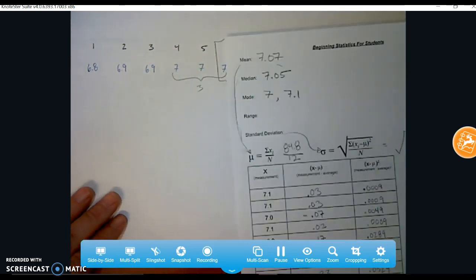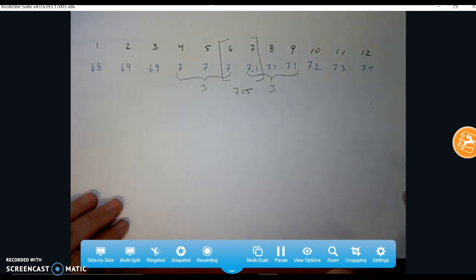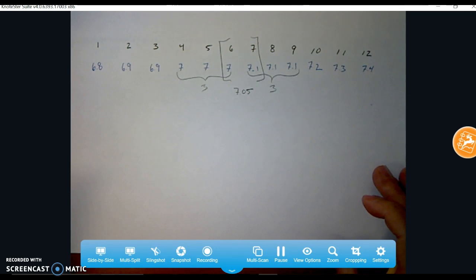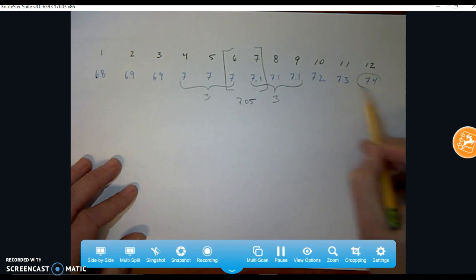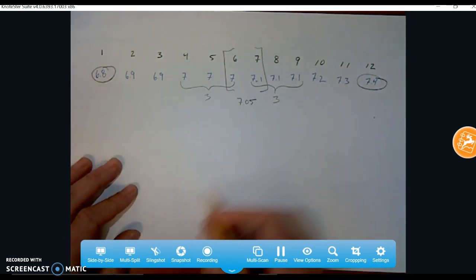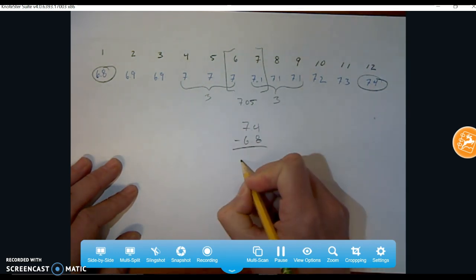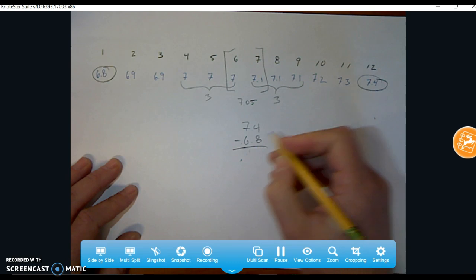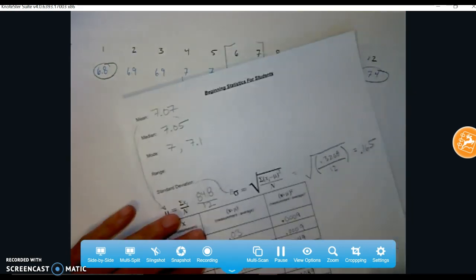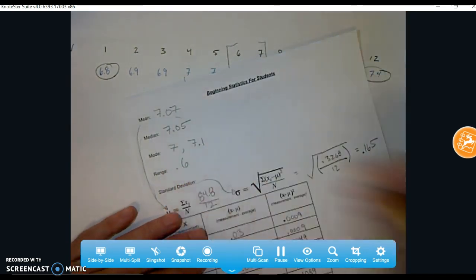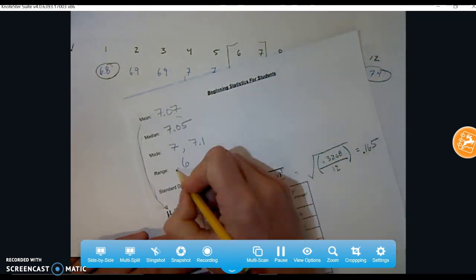The range is really simple. The range is simply the max minus the min. What's your largest value? What's your smallest value? And what's the difference between them? Well, since I already have it sorted, here's my maximum value. Here's my minimum value. So 7.4 minus 6.8 gives me 0.6. So my range is 0.6. My data spans from small to large 0.6 measurements in that case.